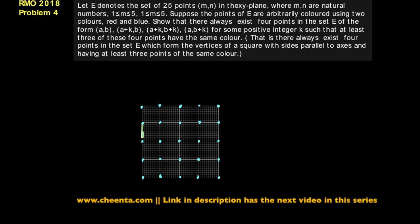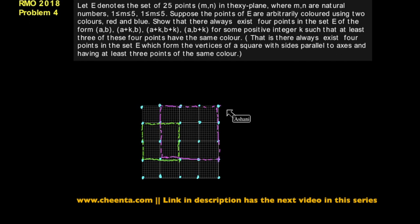For example, this is a square that we can draw, and this is another square. Similarly, we can draw a bigger square. What the problem says is that there exist 4 points in the set of these 25 points which form the vertices of a square, with at least 3 of the points of the same colour.